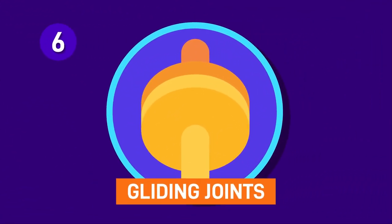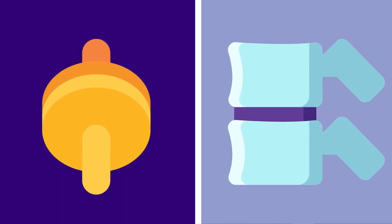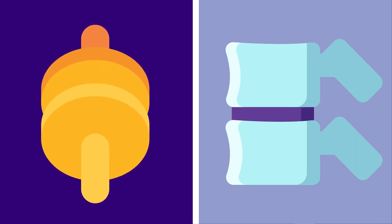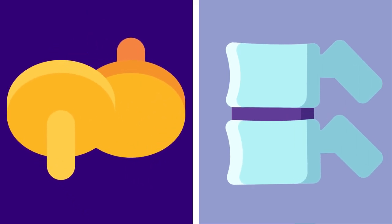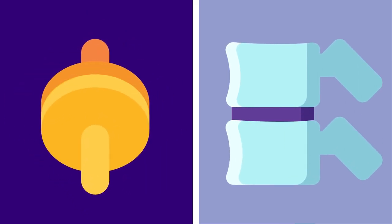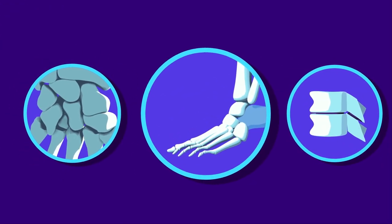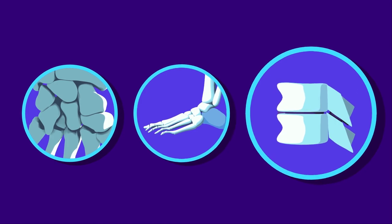Gliding joints. Gliding or plane joints, as the name suggests, allow smooth motion. The joint surface of both bones are flat, and allows the glide and sliding movement against each other. The examples of gliding joints are wrists, ankles, and the spine.